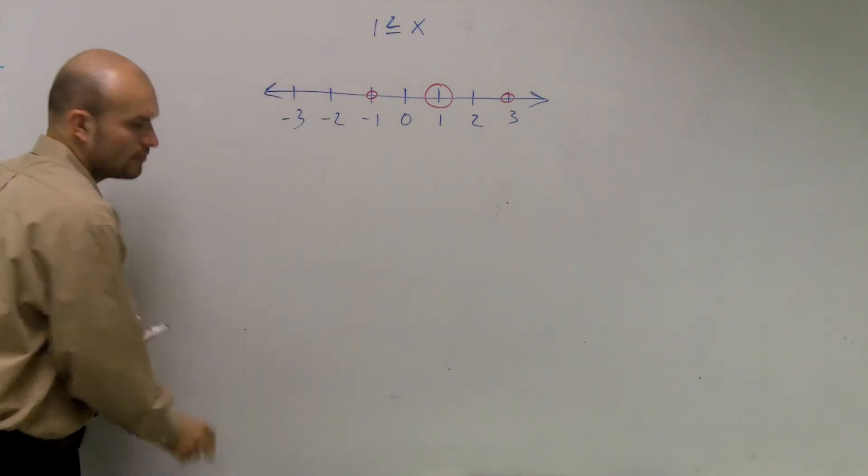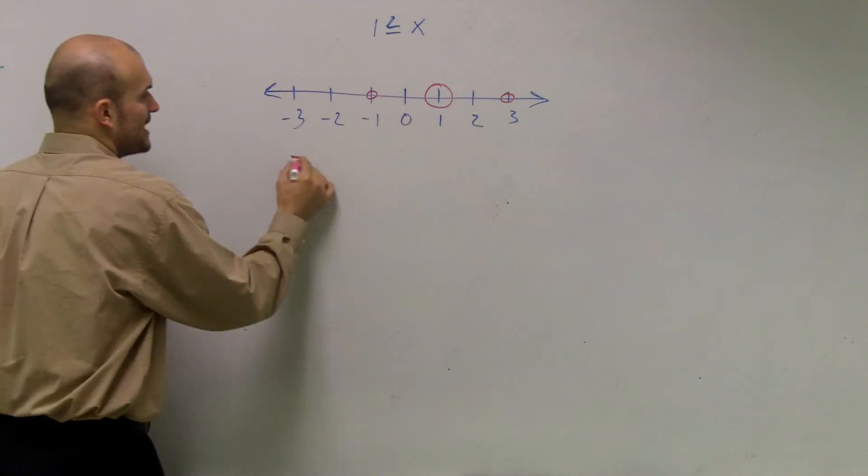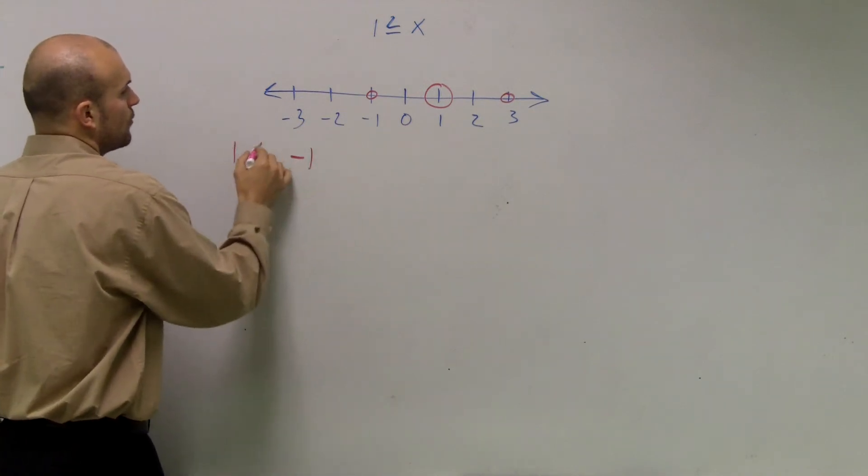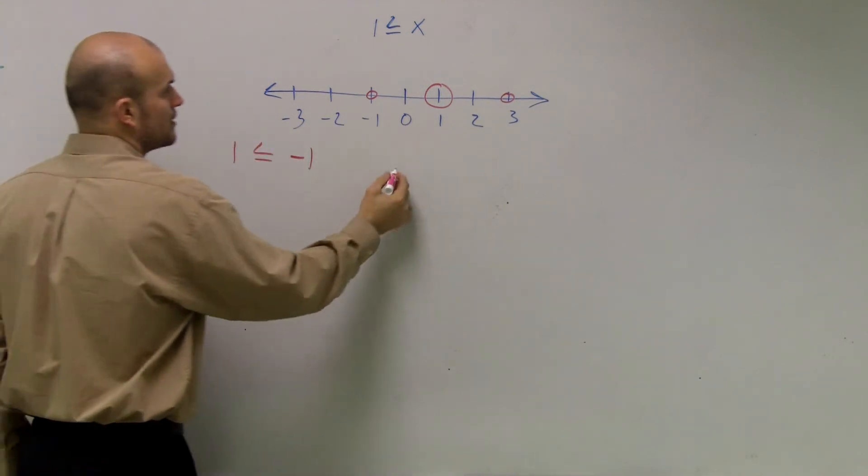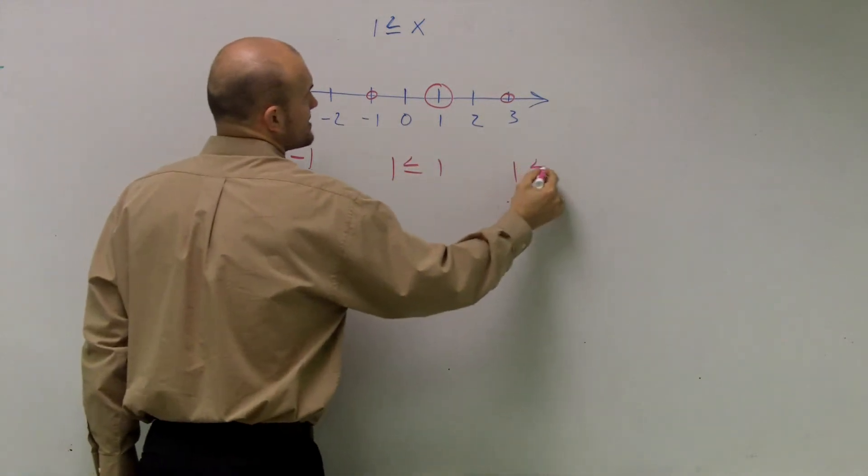If they're true, we shade them in. If they're false, we leave them open. So, we do negative 1. I'm sorry. 1 is less than or equal to negative 1. 1 is less than or equal to 1. And 1 is less than or equal to 3.